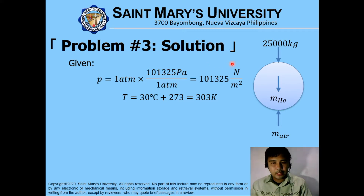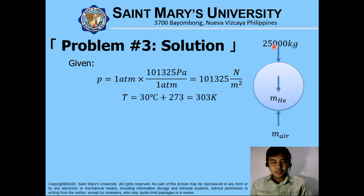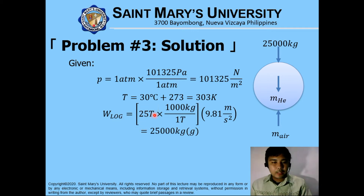From Pascal, we convert it into the fundamental SI unit, which is Newton per meter squared. The given temperature is 30 degrees Celsius plus 273, which equates to 303 Kelvin. Here is the equilibrium diagram for our log. 25 metric tons is equivalent to 25,000 kilograms — one metric ton is equivalent to 1,000 kilograms. This is the underlying equation of equilibrium. The weight of the log is 25 tons multiplied by 1,000 kg/ton multiplied by gravity.